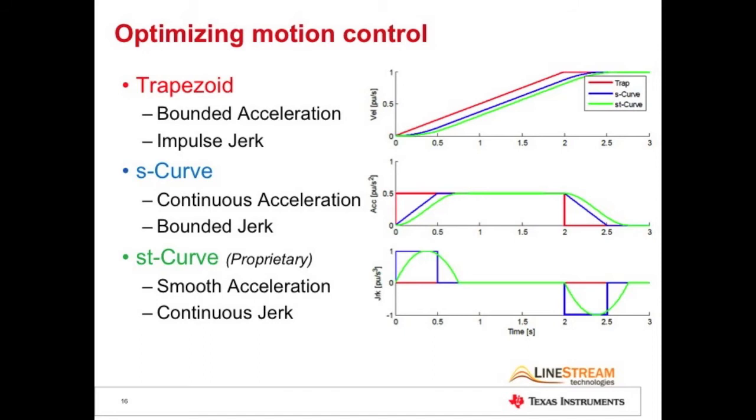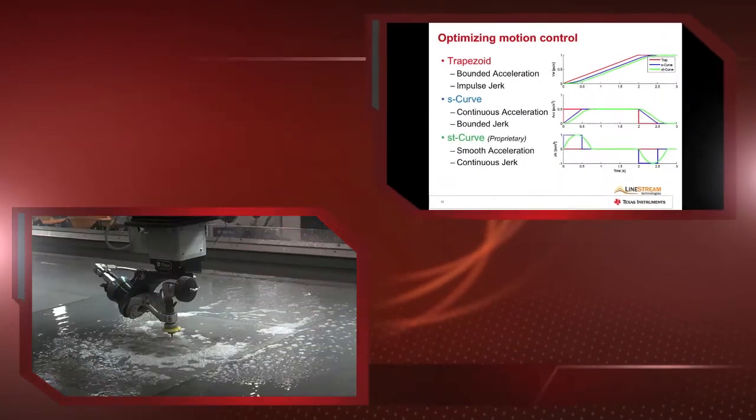These constraints will be applied to the curve type selected by the user, either trapezoidal, S-curve, or the ST-curve featuring continuous jerk.